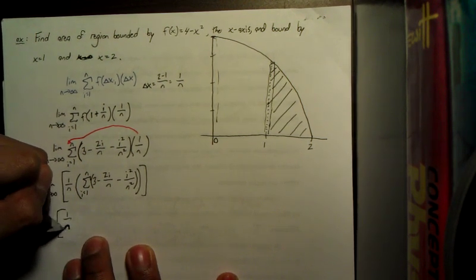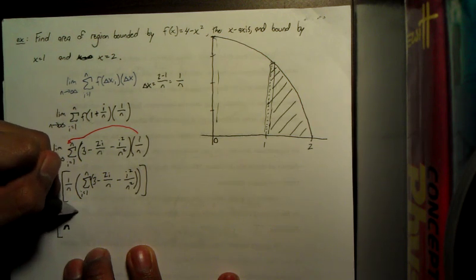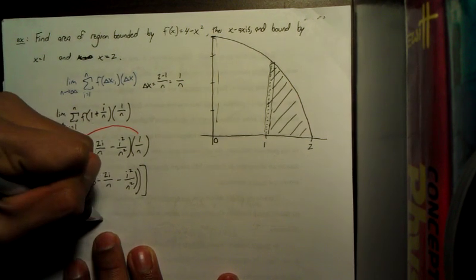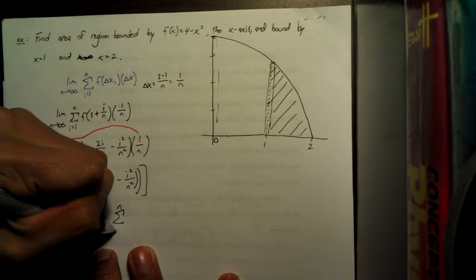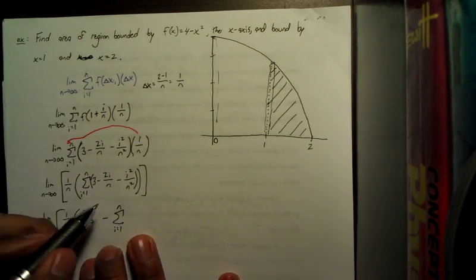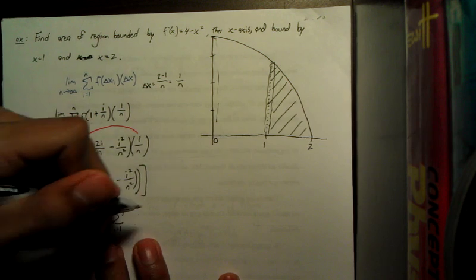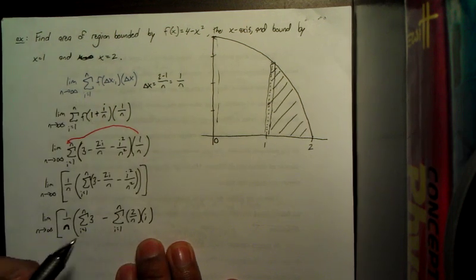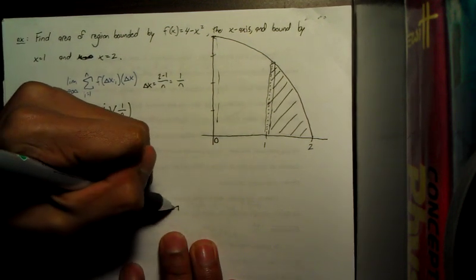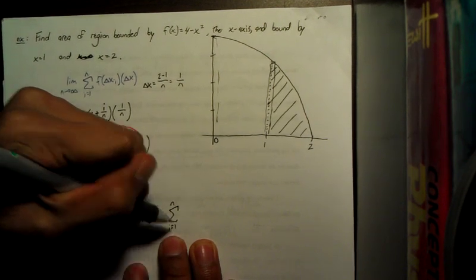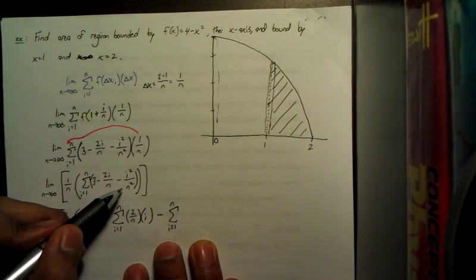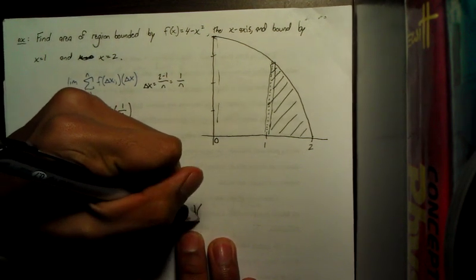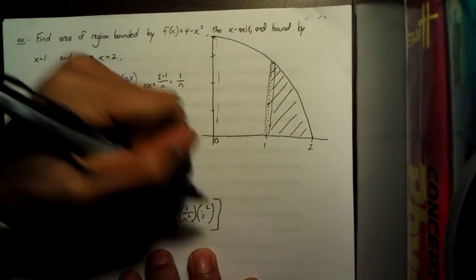So that's going to be summation i equals 1 to n of 3 minus summation i equals 1 to n. I'm going to pull out a 1 over n squared to isolate the i squared. Close our brackets.